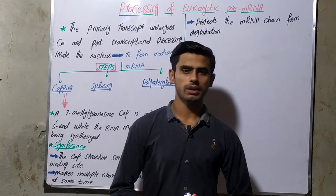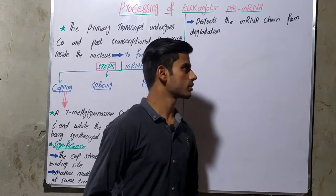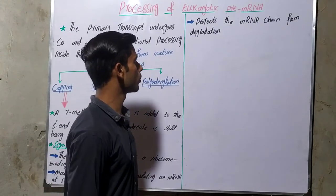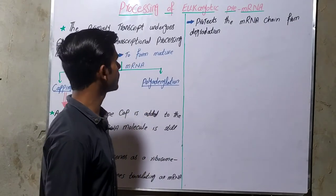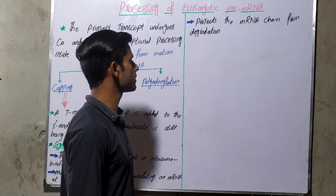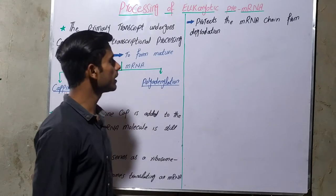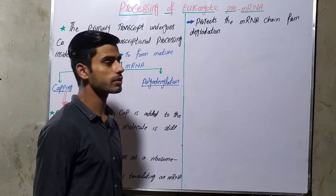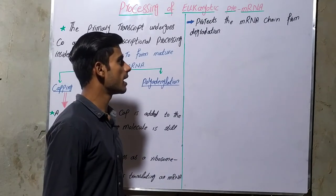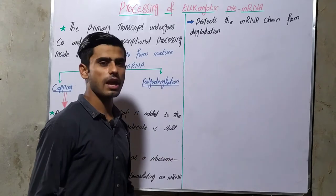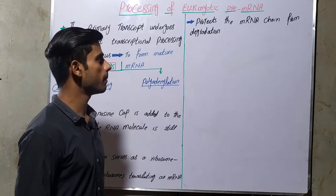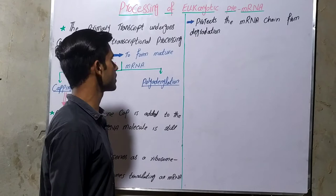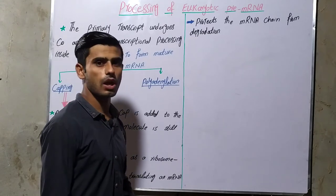Hi guys, my name is Jamil Ahmad. As you know, we are studying about transcription. In the previous tutorial we talked about eukaryotic transcription, and now in this lecture we will discuss the processing of eukaryotic pre-messenger RNA. In the result of eukaryotic transcription, pre-messenger RNA is first produced, and then processing of pre-messenger RNA happens, and this pre-messenger RNA becomes the mature messenger RNA after processing.